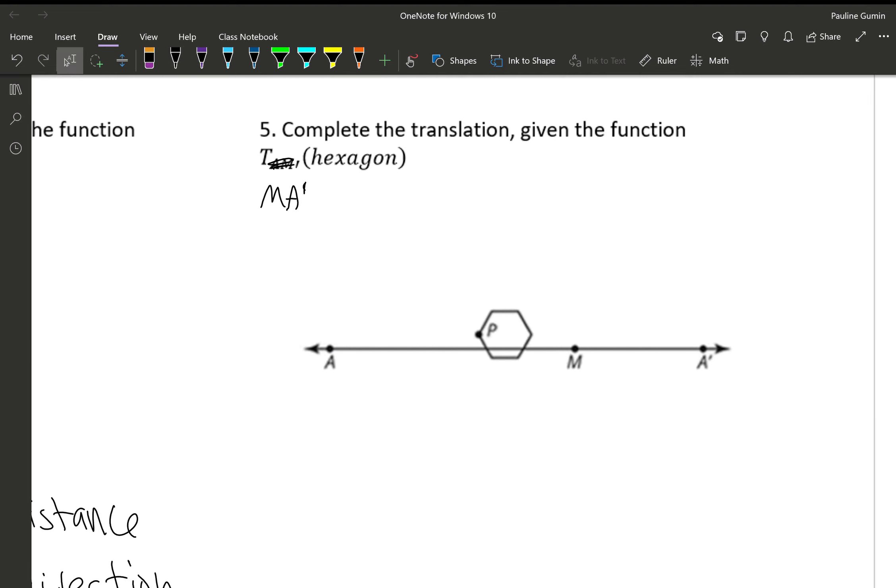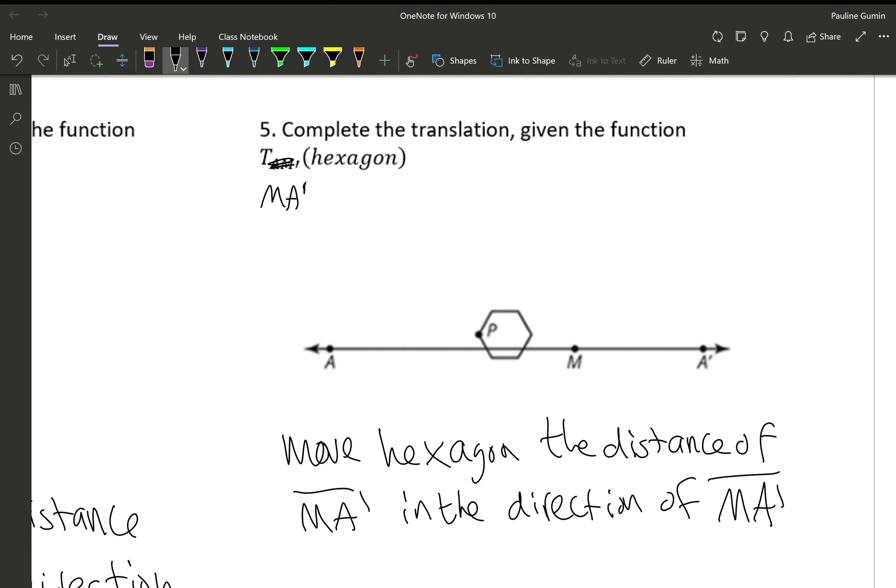Next, we have TMA prime hexagon. This means move hexagon the distance of MA prime in the direction of MA prime. Let's find MA prime. We start at M. We go towards A prime. That looks like we're going to the right. I'm going to draw that same segment over here. Draw a little dot here. That's P prime. And then I'm going to do my best in drawing a hexagon.